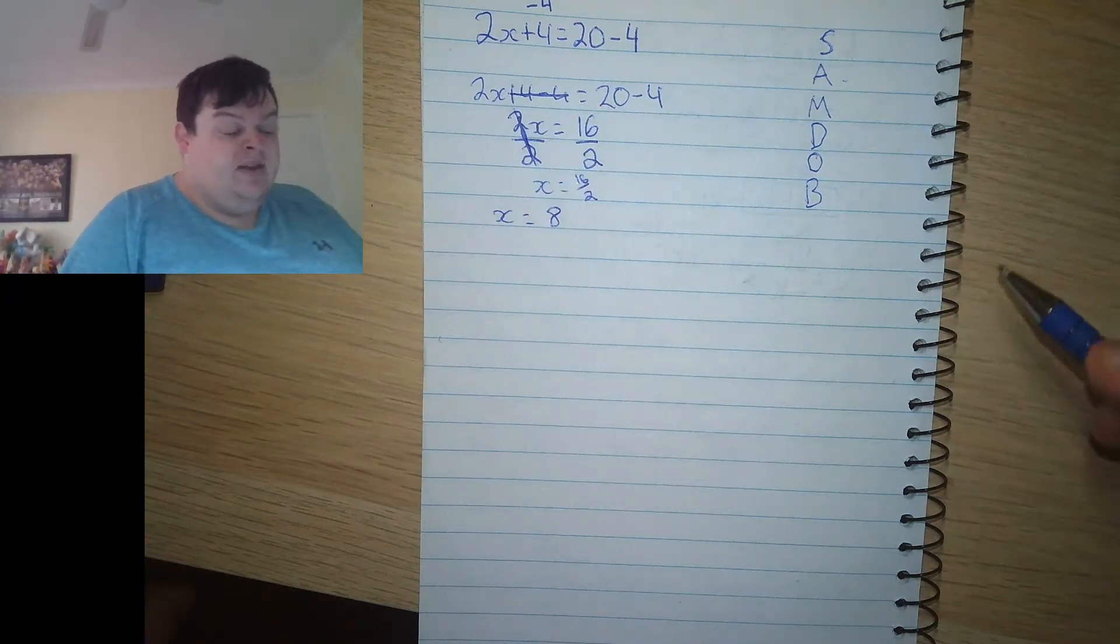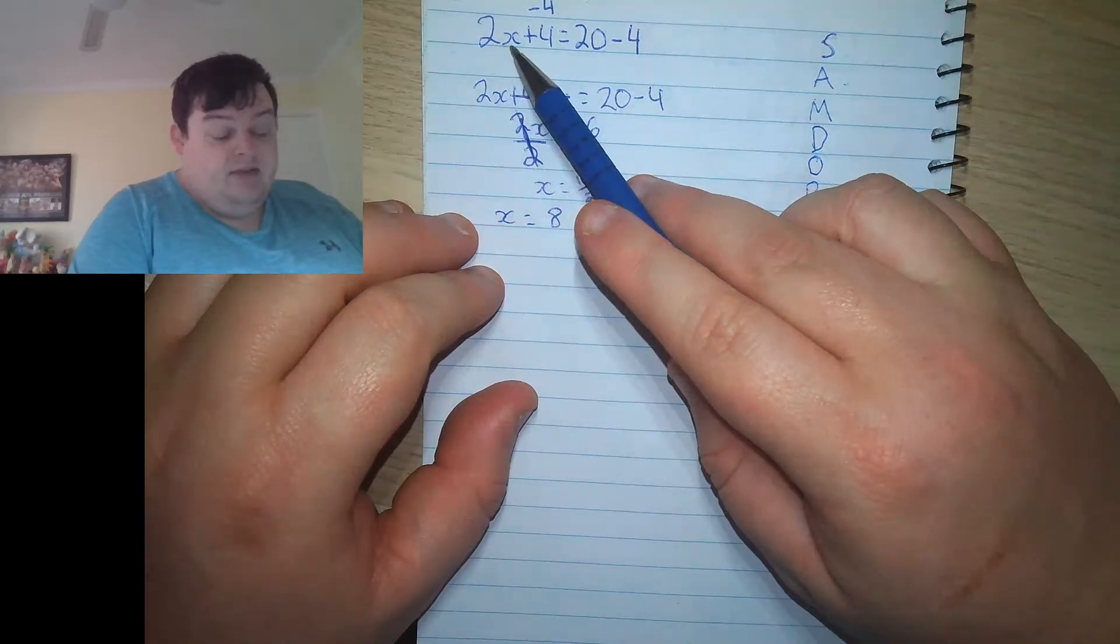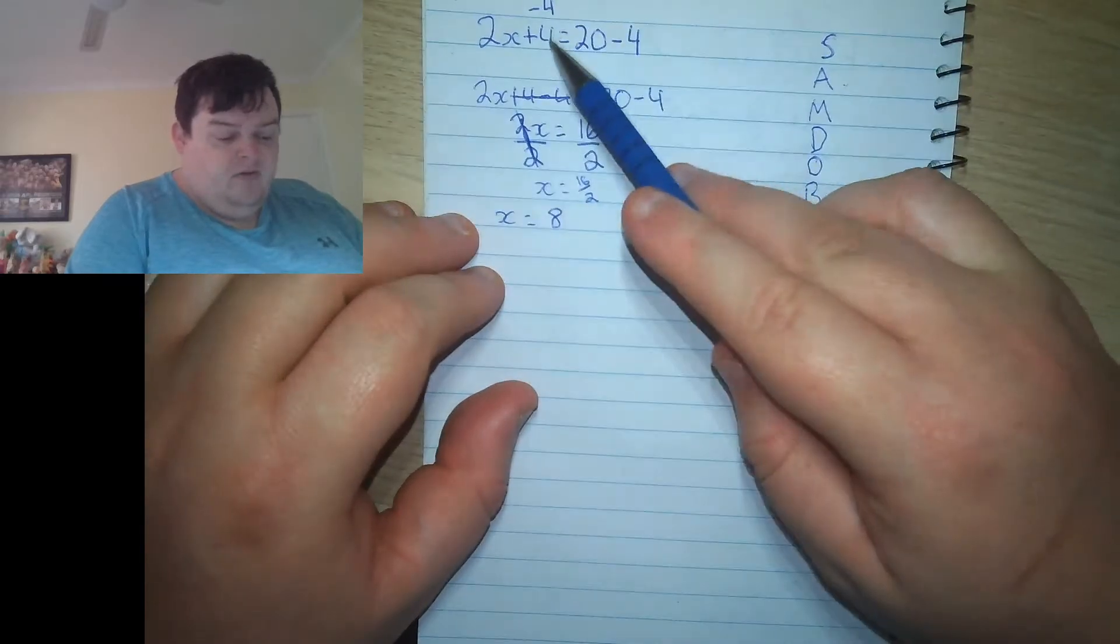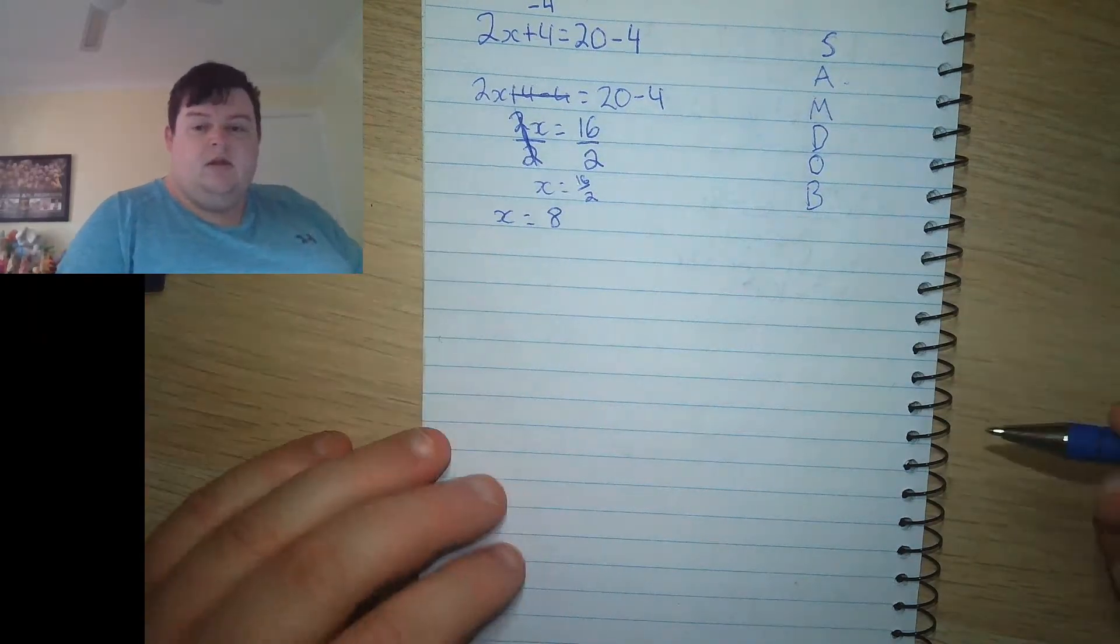And if you want to check to see if you've got it right, you can sub that back into the original answer. So 2 times x, so 2 times 8 is 16 plus 4 is 20. So you know that you've done all right. Let's do another one.